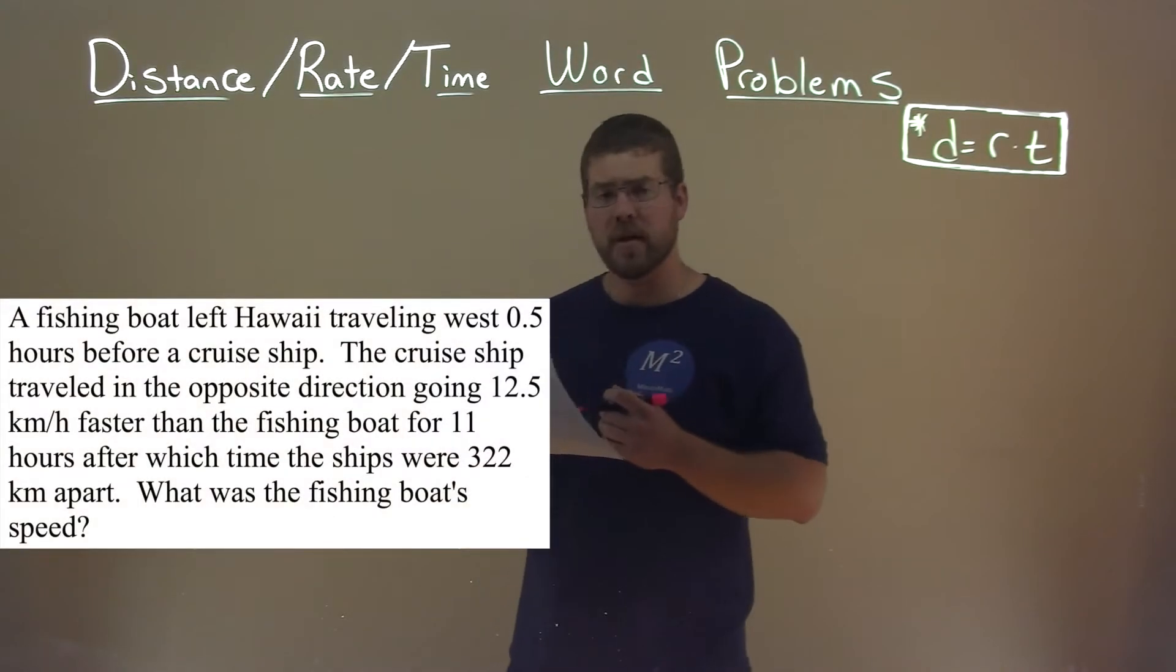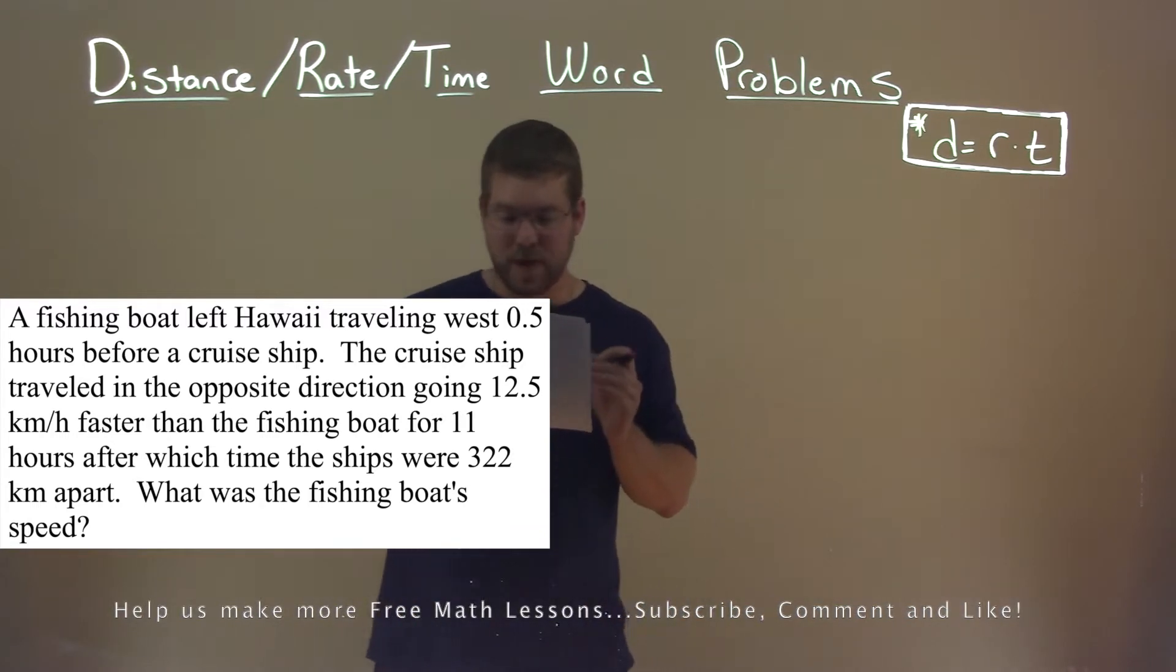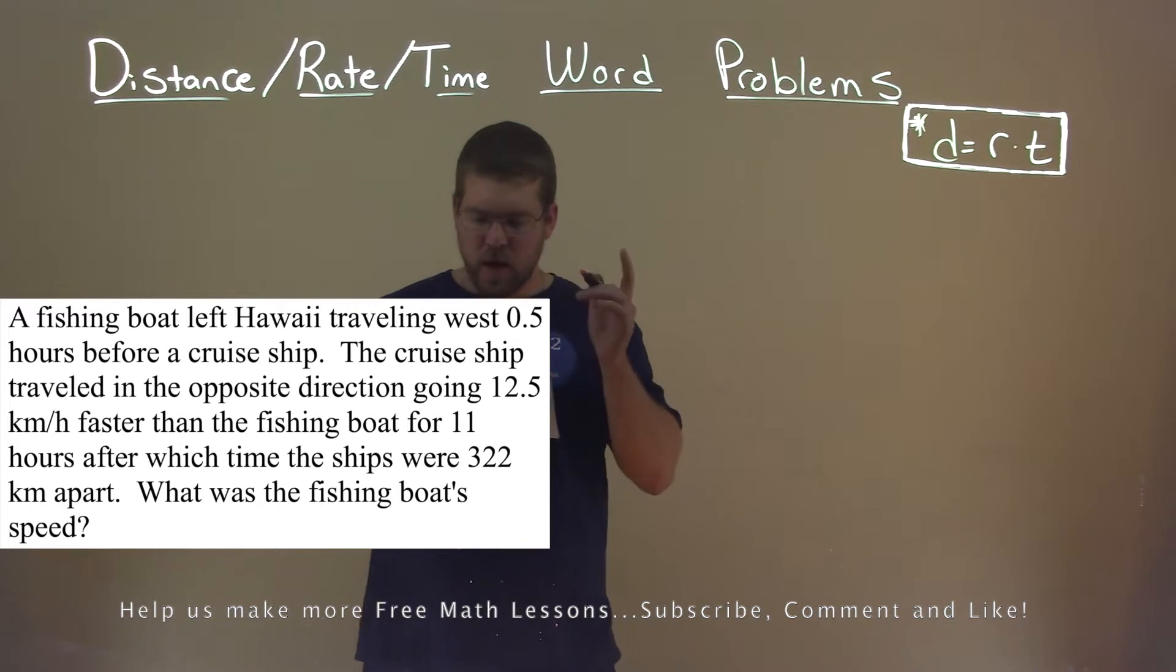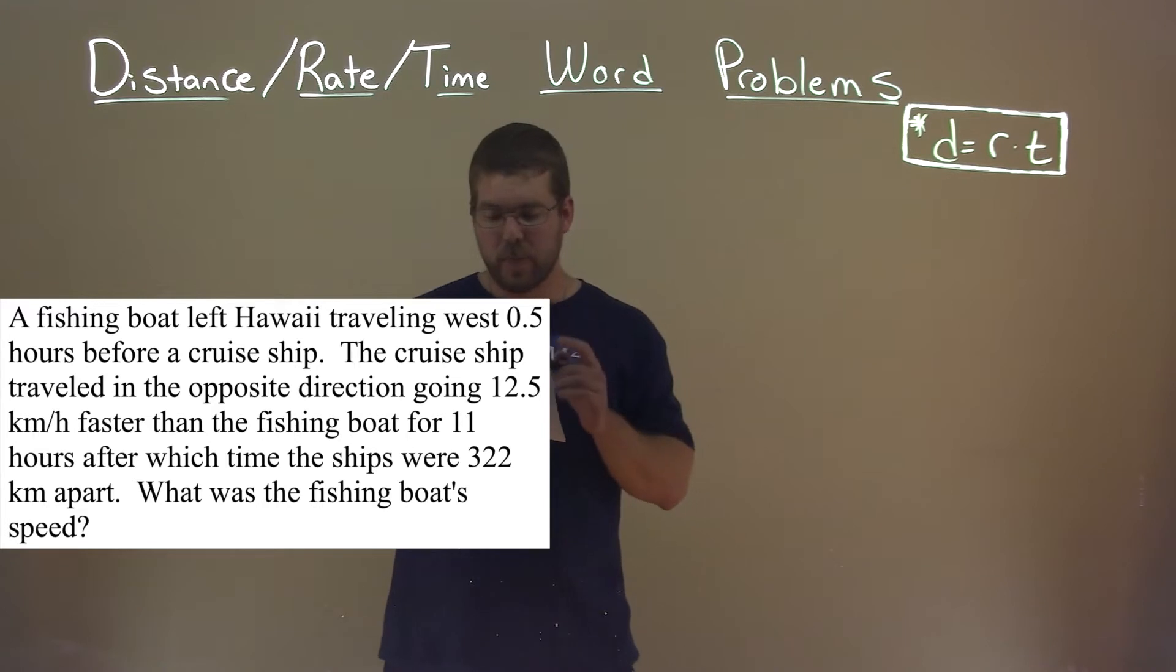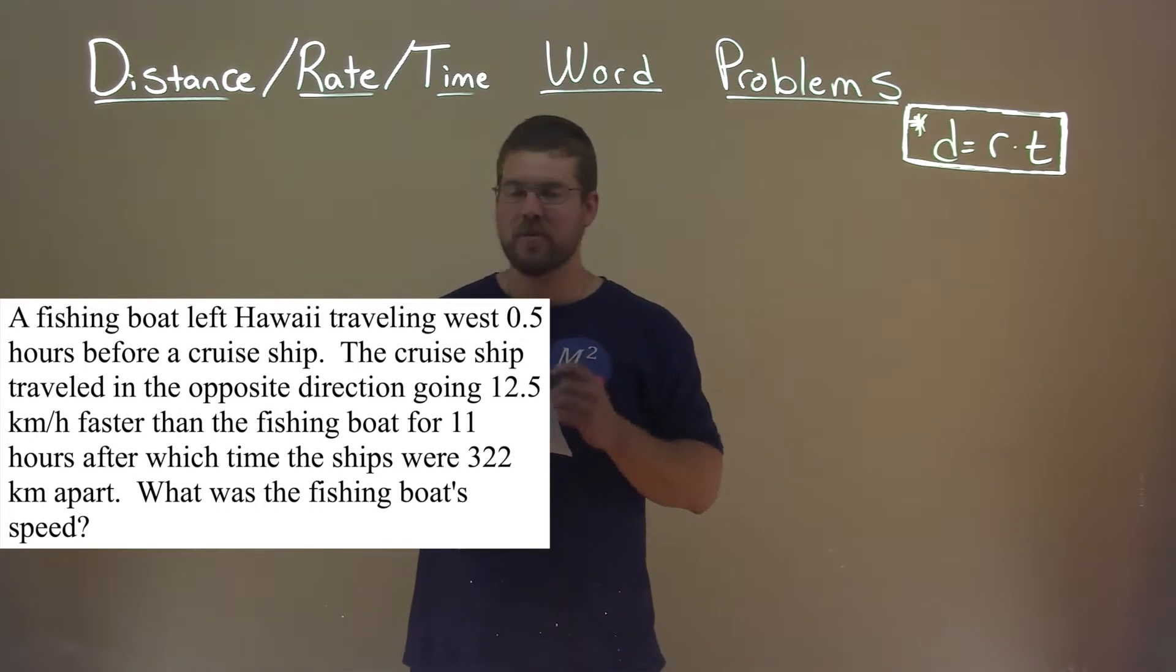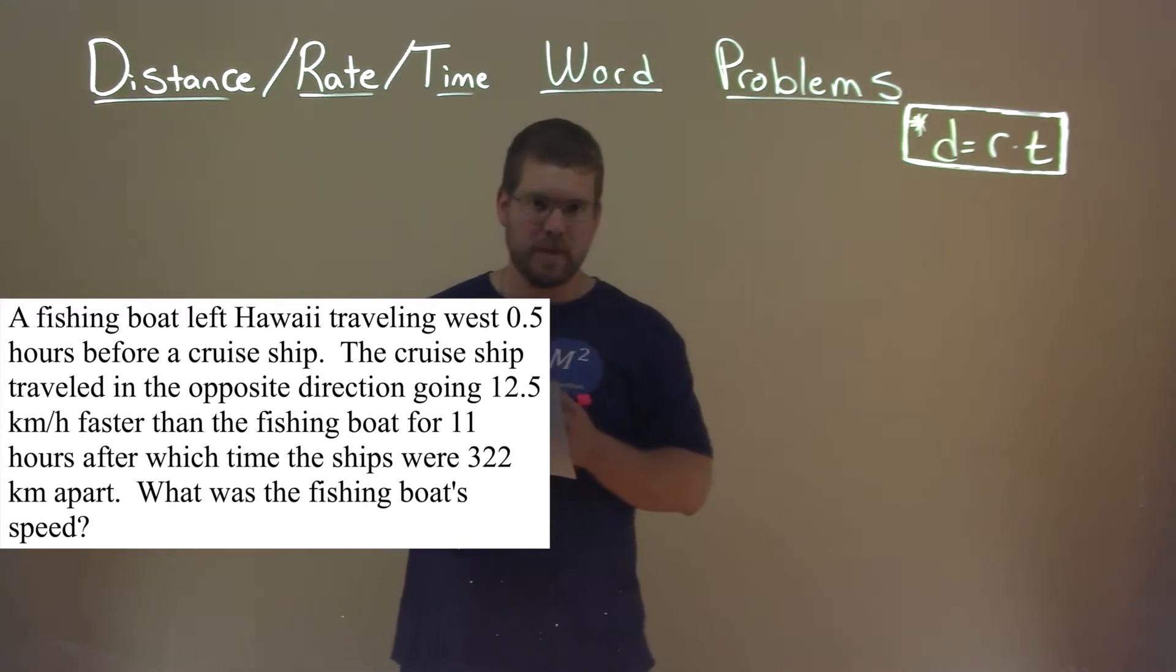We're given this problem right here. A fishing boat left Hawaii traveling west 0.5 hours before a cruise ship. The cruise ship traveled in the opposite direction, going 12.5 kilometers per hour faster than the fishing boat for 11 hours, after which time the ships were 322 kilometers apart. A lot packed in that sentence. What was the fishing boat's speed?